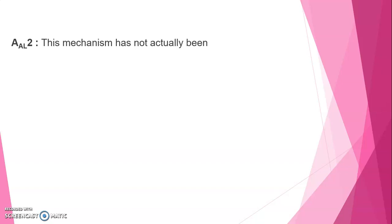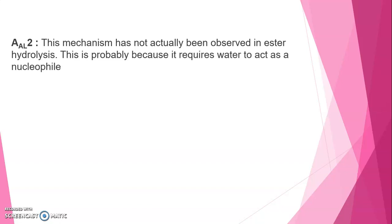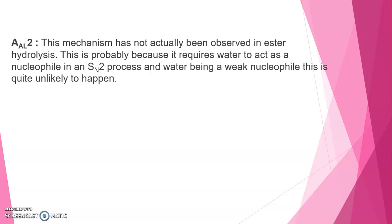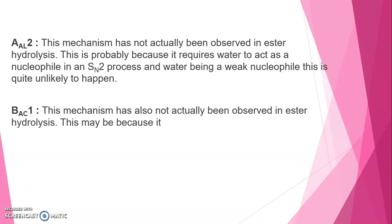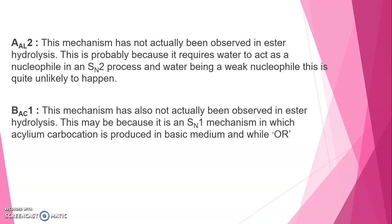Next, AL2 mechanism: This mechanism has not actually been observed in ester hydrolysis. This is probably because it requires water to act as a nucleophile in an acidic process, and water being a weak nucleophile, this is quite unlikely to happen. Next, BSE-1 mechanism: This mechanism has also not actually been observed in ester hydrolysis. This may be because it is an acidic mechanism in which a carbocation is produced in base medium, while an alkoxide ion acts as a leaving group. Both are extremely unlikely.